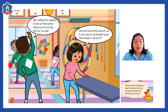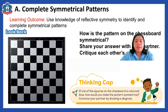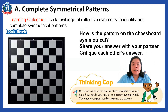One of the children — the boy — is doing some exercise, so what is his reflection on the mirror? The girl is also moving a table. Observe the shapes on their clothes — are the shapes symmetrical? So what do we mean by symmetry? Let's start with Lesson A: completing symmetrical patterns.